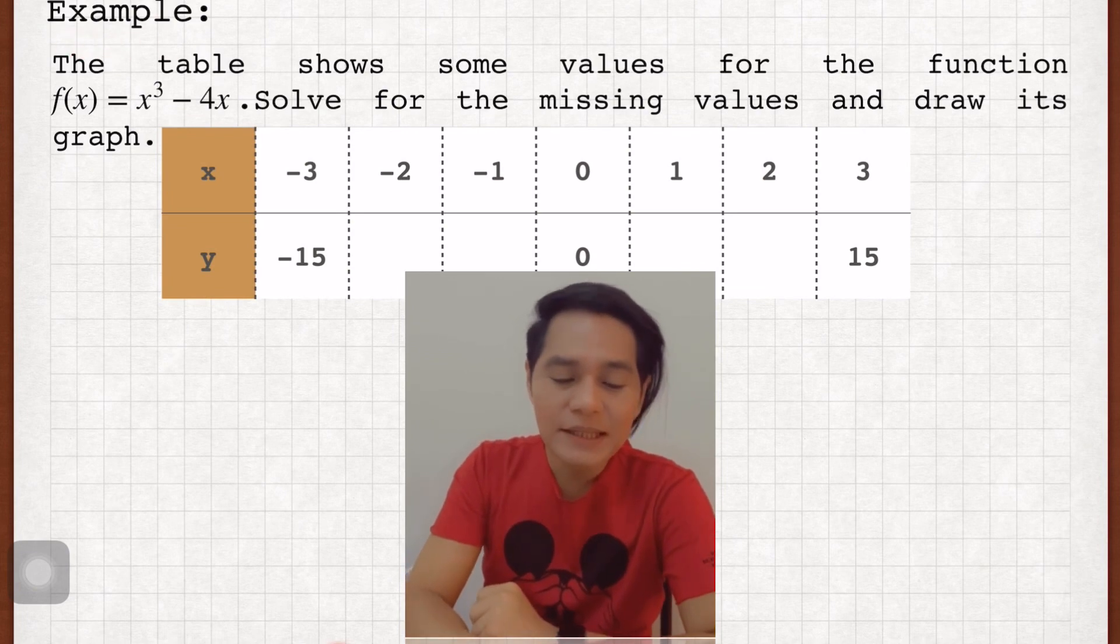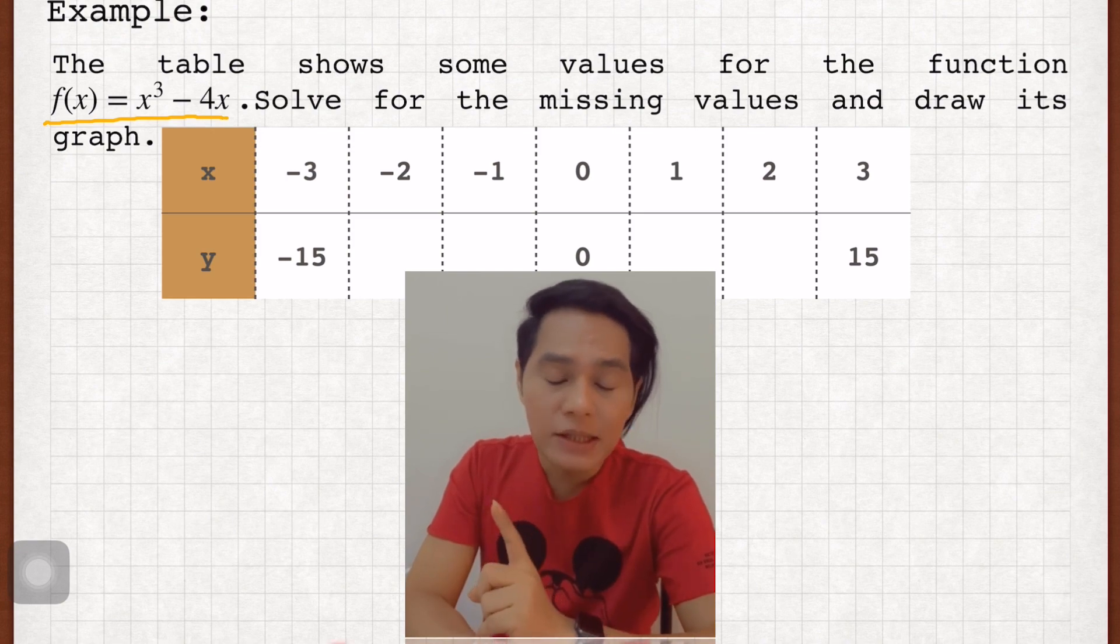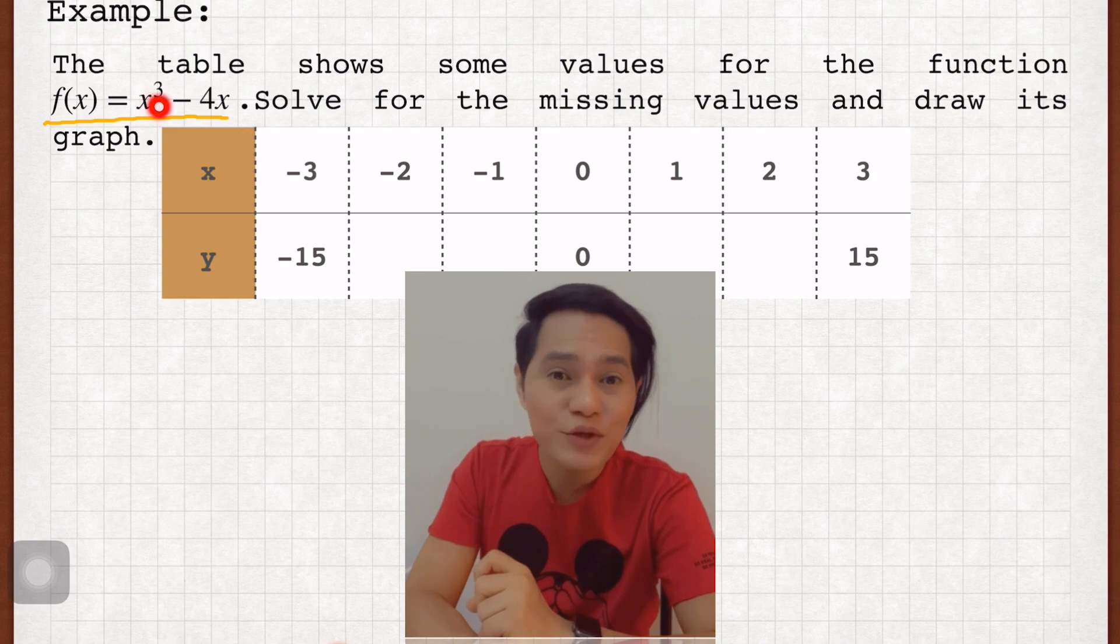I have here an example. The table shows some values for the function f(x) = x³ - 4x, and this is a perfect example of a cubic function. Why? Because the highest exponent of the variable is 3. That's why it is a cubic function. Take note of that.